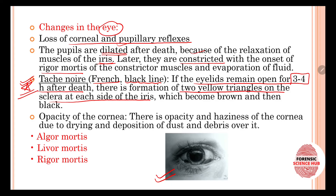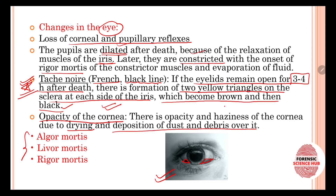With tache noire, two yellow triangles form on the sclera on each side of the iris — as seen in the picture. These triangle shapes first appear yellow, then become brown, and eventually turn black over time. Then comes opacity of the cornea: the cornea starts to become opaque due to drying and deposition of dust and debris over it.